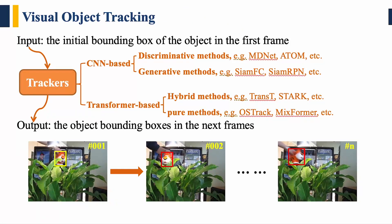Before presenting our method, let me introduce the task we focus on. Given the initial bounding box of the object in the first frame, visual object tracking algorithms need to predict the object's position and scale in subsequent frames.